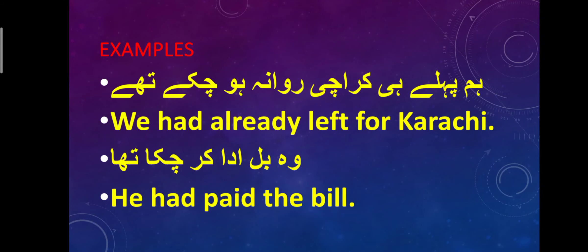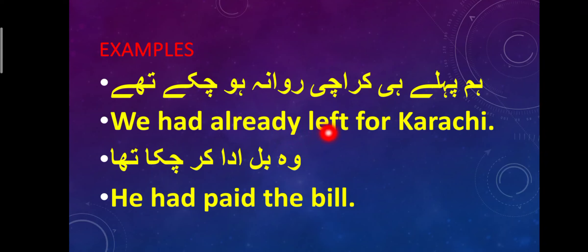For example: 'Hume pehle hi Karachi rawana ho chuke the' — We had already left for Karachi. In this, 'we' is the subject, 'had' is the helping verb, 'already' means 'pehle hi', and 'left' is the third form. 'Wo bill ada kar chuka tha' — He had paid the bill.